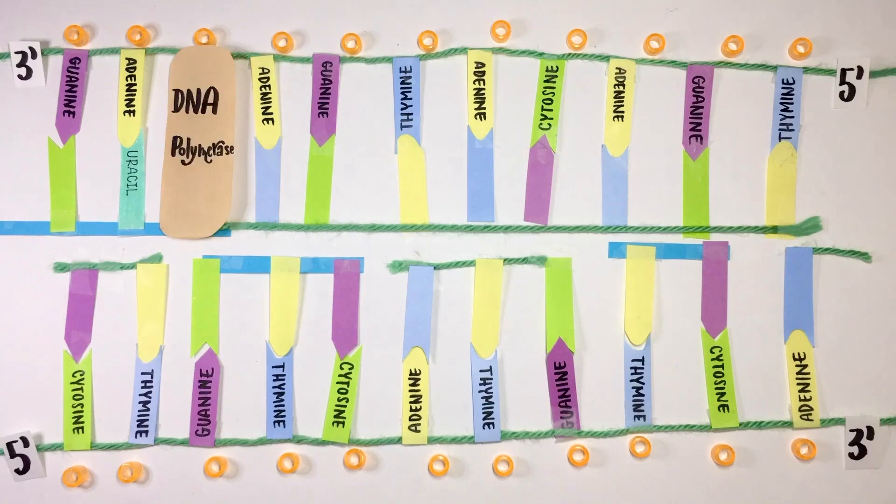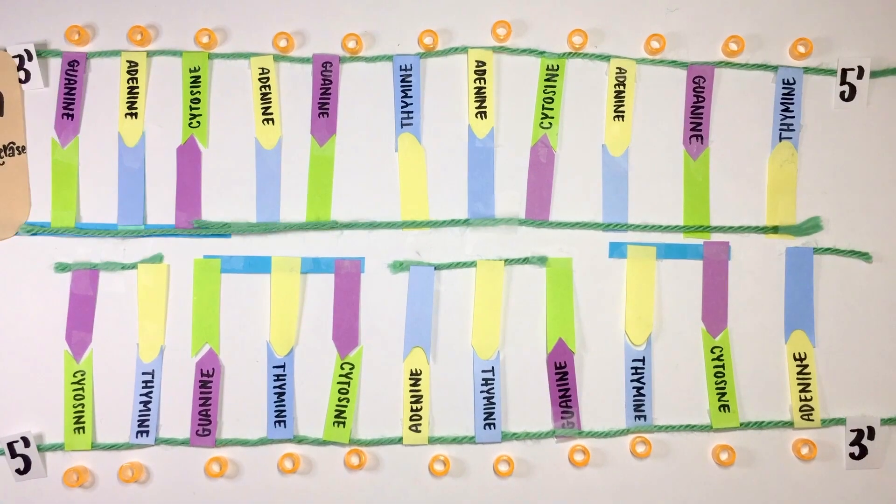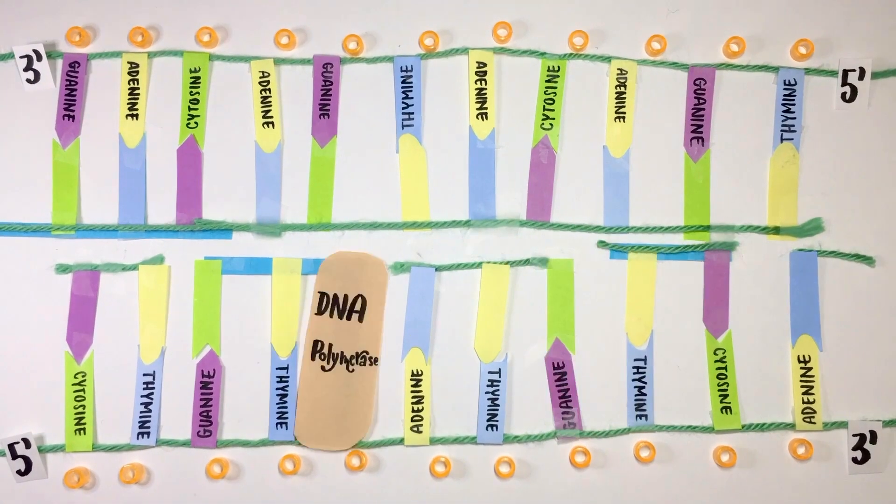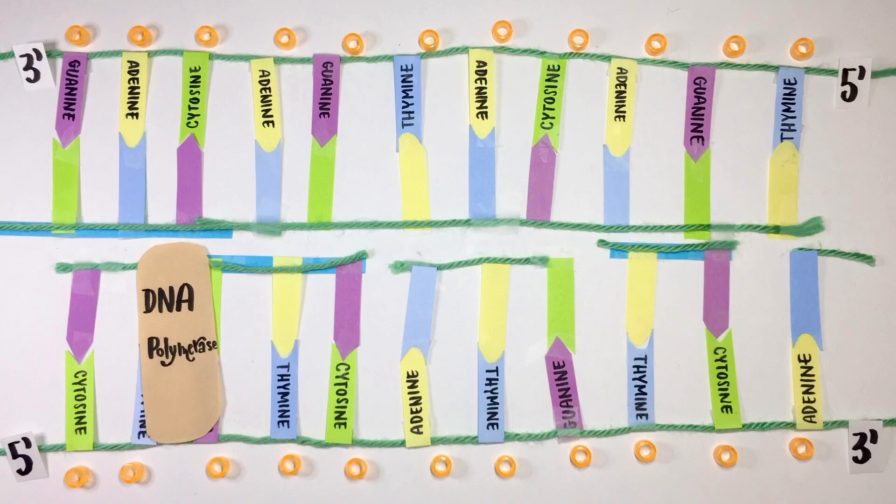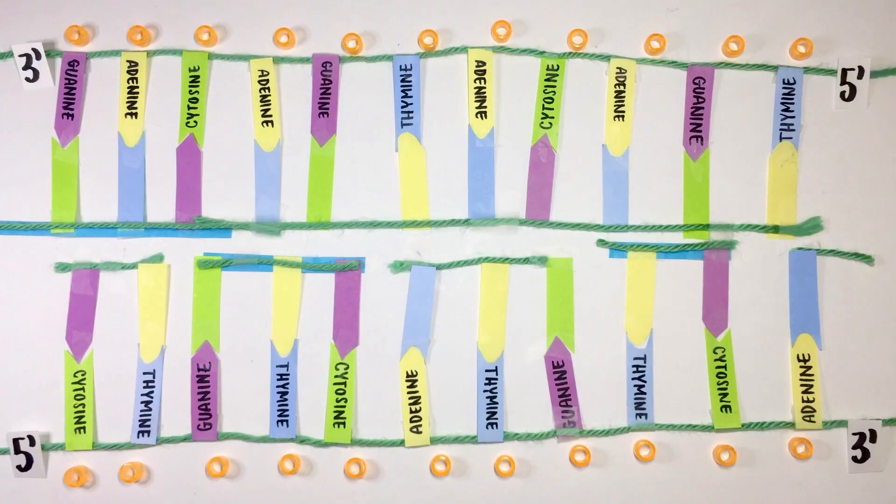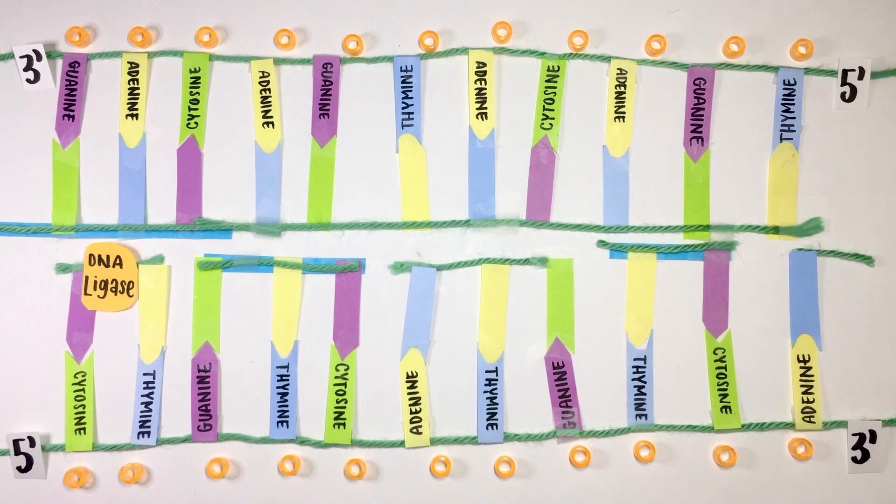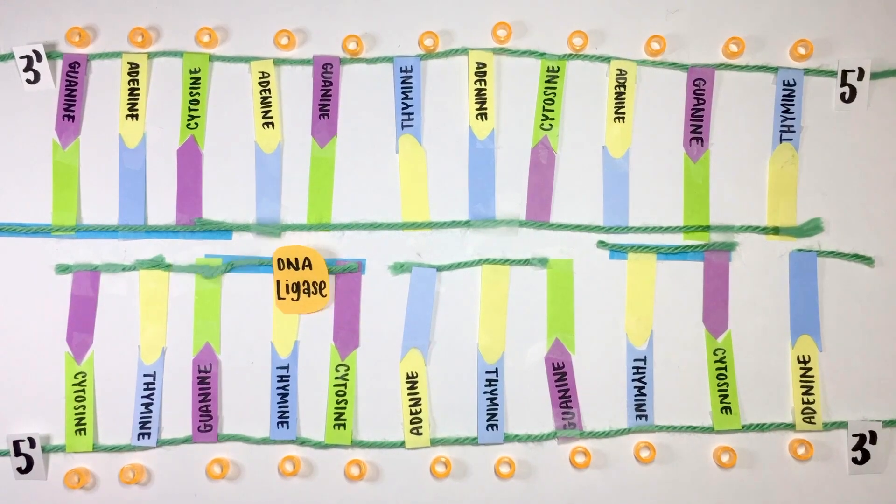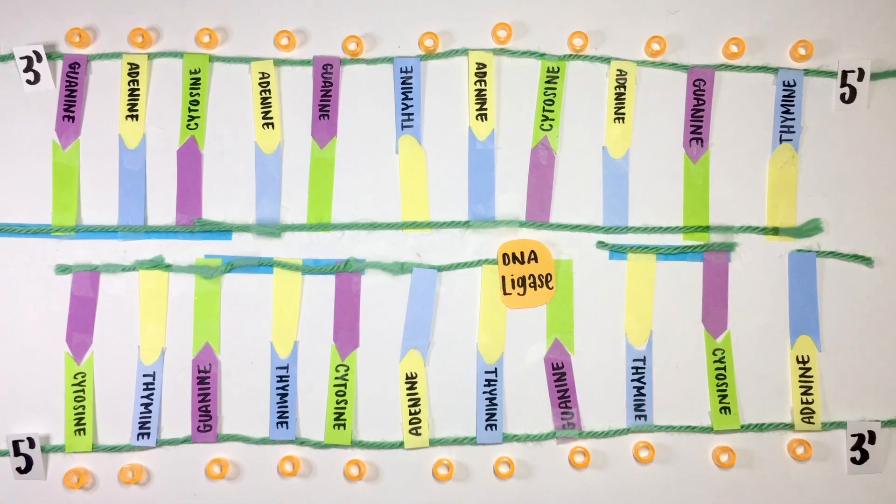During the last stage of DNA replication called termination, the RNA primers are removed from the newly created strands and are replaced with corresponding DNA nucleotides by DNA polymerase 1. An enzyme called DNA ligase then joins the gaps between the Okazaki fragments to form one unified strand.